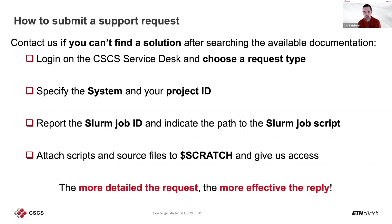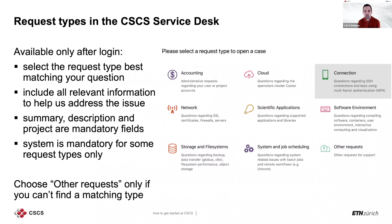When logging a support request, sign in with your credentials on the CSCS service desk and choose a request type. You will see fields to fill in such as system, project ID, SLURM job ID, SLURM script, and you can attach files like scripts or source files. Remember: the more detailed your request, the more effective the reply. After logging in and scrolling down, you will see a page with nine types of requests — select the one best matching your issue. Each has a small explanation, such as accounting, cloud, connection, authentication, and job scheduling.